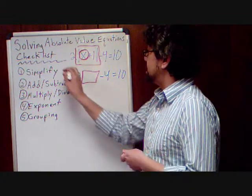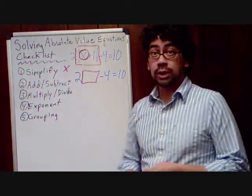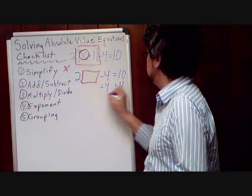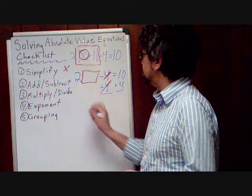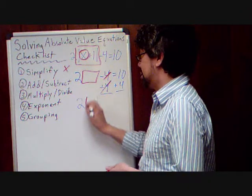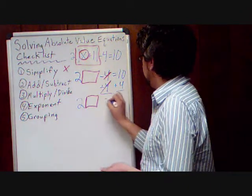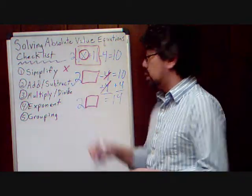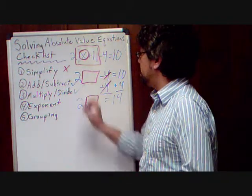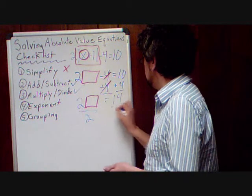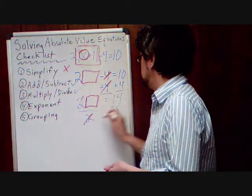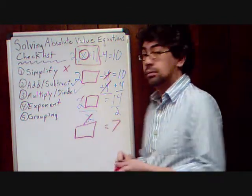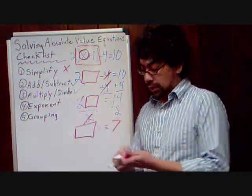We don't actually have a simplify step here. But we do have a subtraction, so we're going to do the opposite of that — add 4 to both sides. We're done with that subtract step. Now we're going to multiply and divide. We're already multiplying by 2, so we're going to divide by 2. We have no exponents so we're going to ignore that.